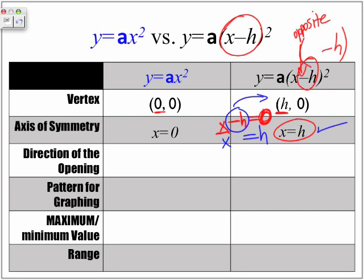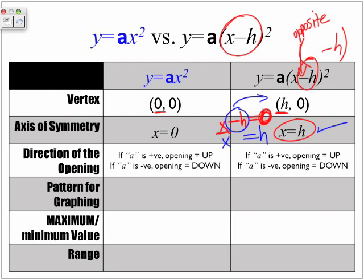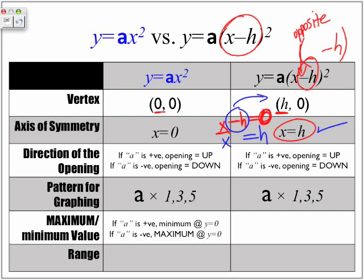In terms of direction of the opening: if the a value is positive, the parabola opens upward; if the a value is negative, the parabola opens downward. That works for both versions. For the graphing pattern, it's whatever the a value is, multiplied by 1, 3, 5. For maximum and minimum: if the parabola opens up, we have a minimum; if it opens down, we have a maximum. The minimum or maximum value is the y value of the vertex, which here is y equals 0.